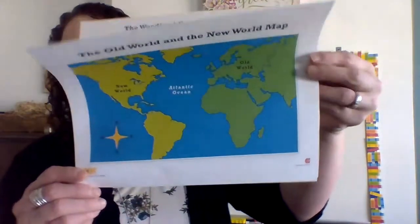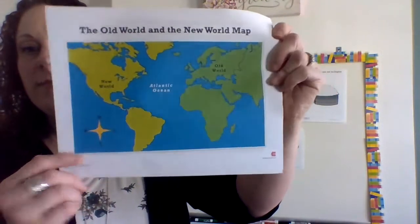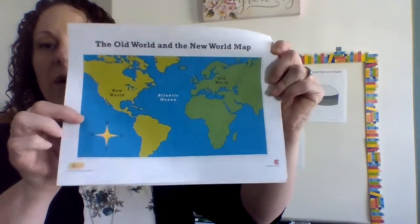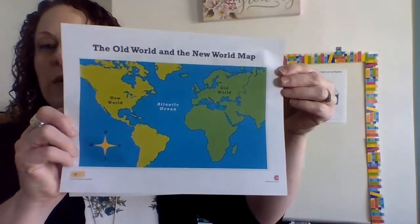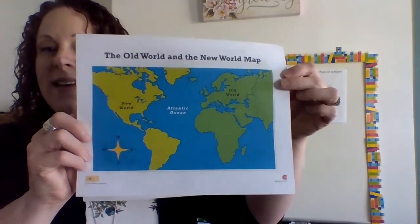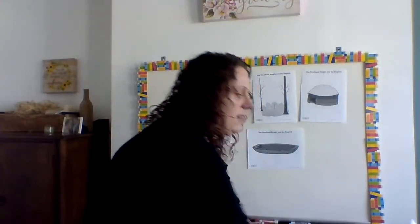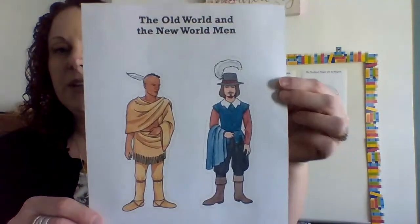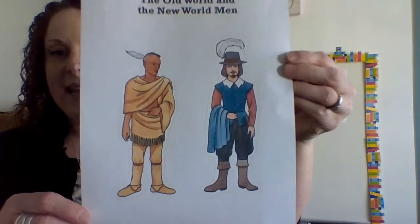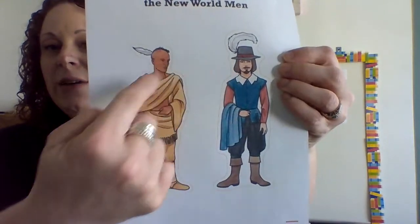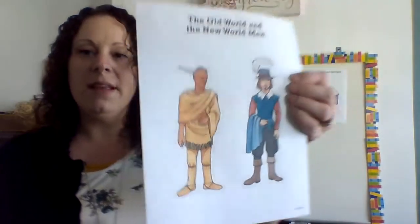Think back to when we were in school — remember we were talking about this map, the New World and the Old World? We were talking about Christopher Columbus, and then we were starting to talk about the Englishmen. We talked about the old world and the new world, and how they dressed differently and how their hair was different.